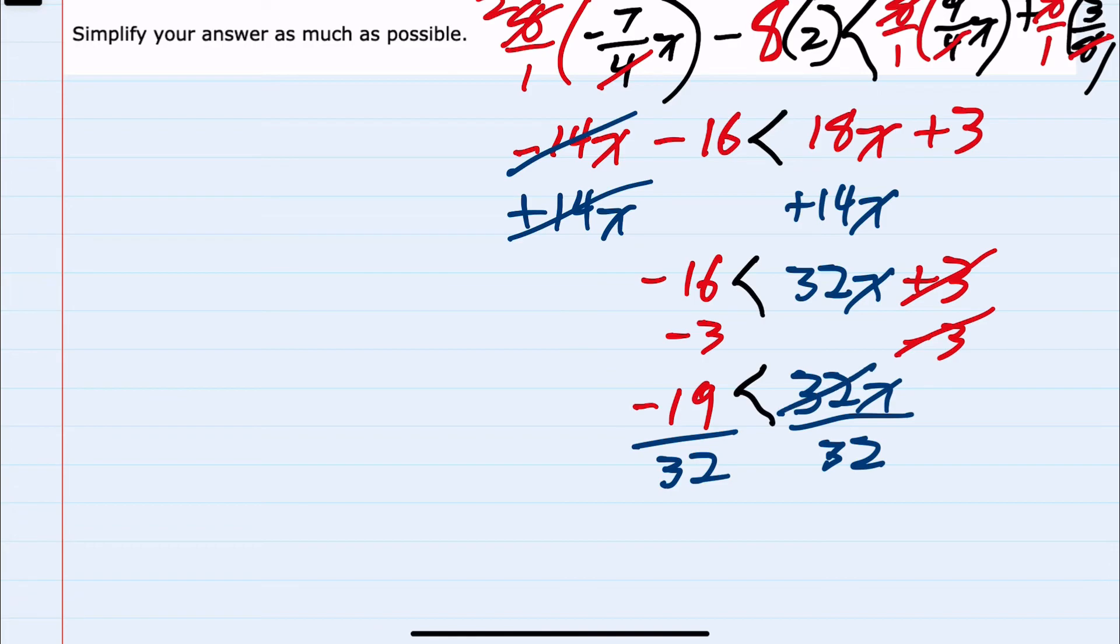Since I'm dividing by a positive, the direction of the inequality stays the same. And on the left-hand side, I now have negative 19 over 32, which doesn't simplify. So this would be our simplified inequality.